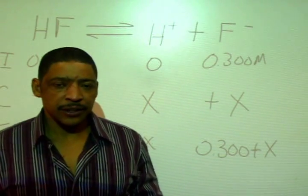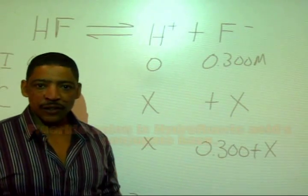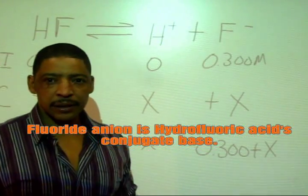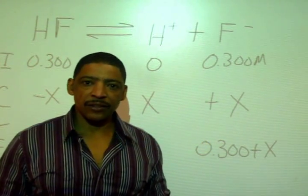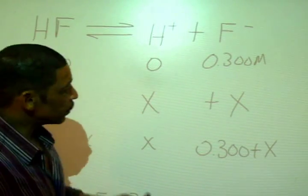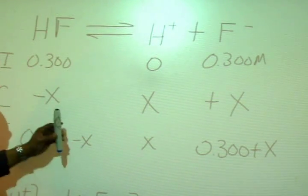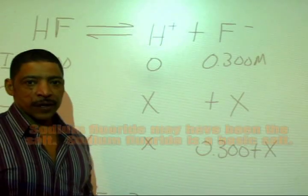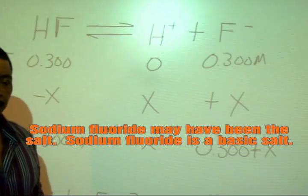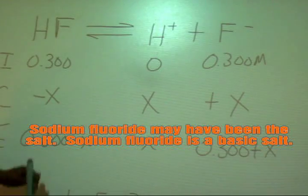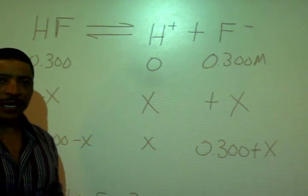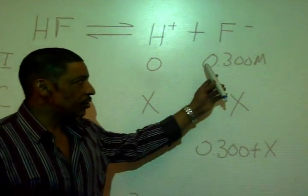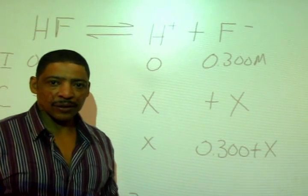A buffer solution contains a weak acid and its salt. The salt will supply the anion required to neutralize any acid added to the buffer system. In this particular buffer solution, our acid is hydrofluoric acid and our anion is a fluoride anion. Initially, we have 0.300 molar of hydrofluoric acid, no hydrogen ion, and our salt concentration is 0.300 molar.